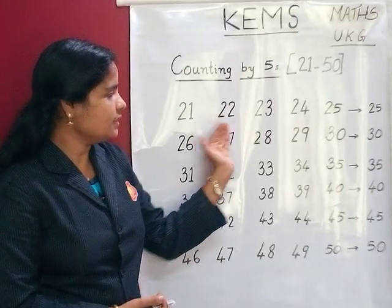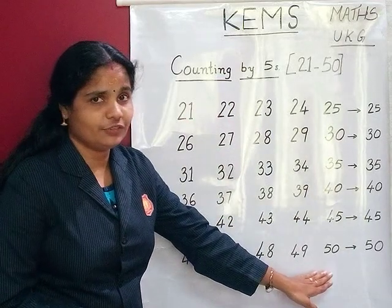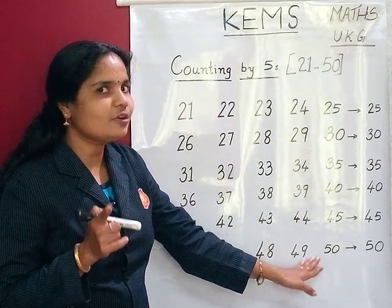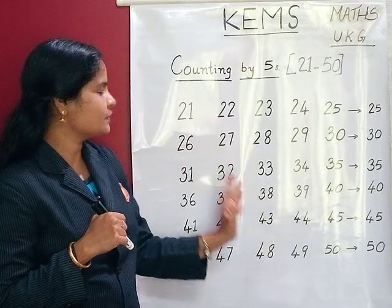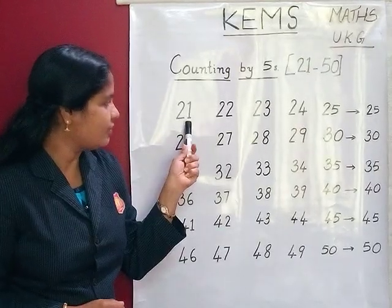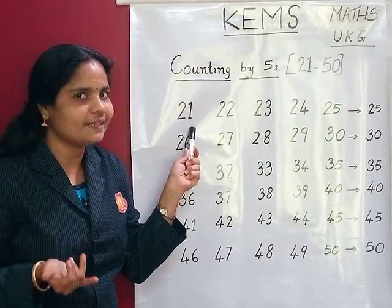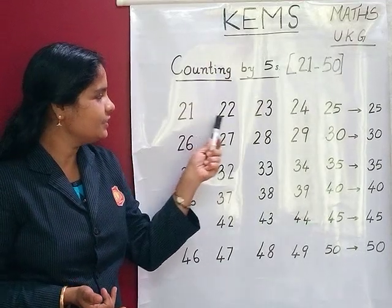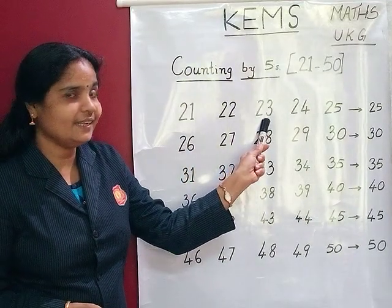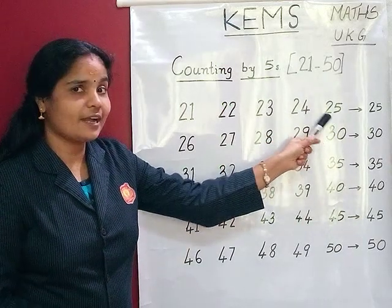First we count 21 to 50. Let's start. All of you count with me. So children, listen. Count with me: 21, 22, 23, 24, 25.